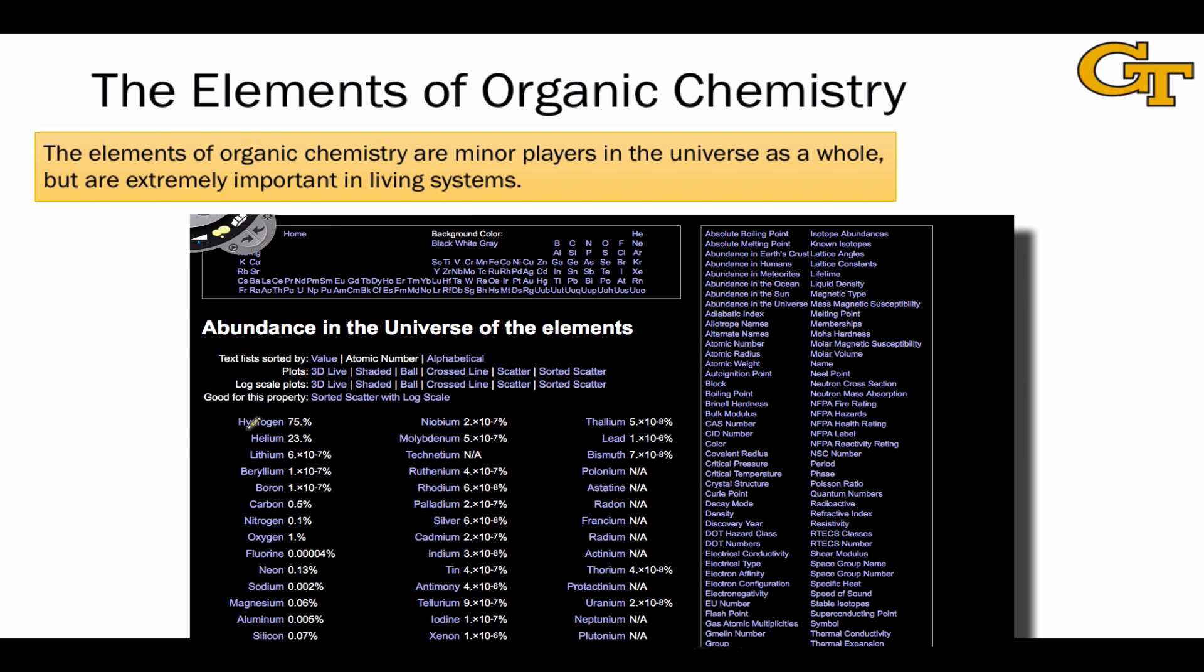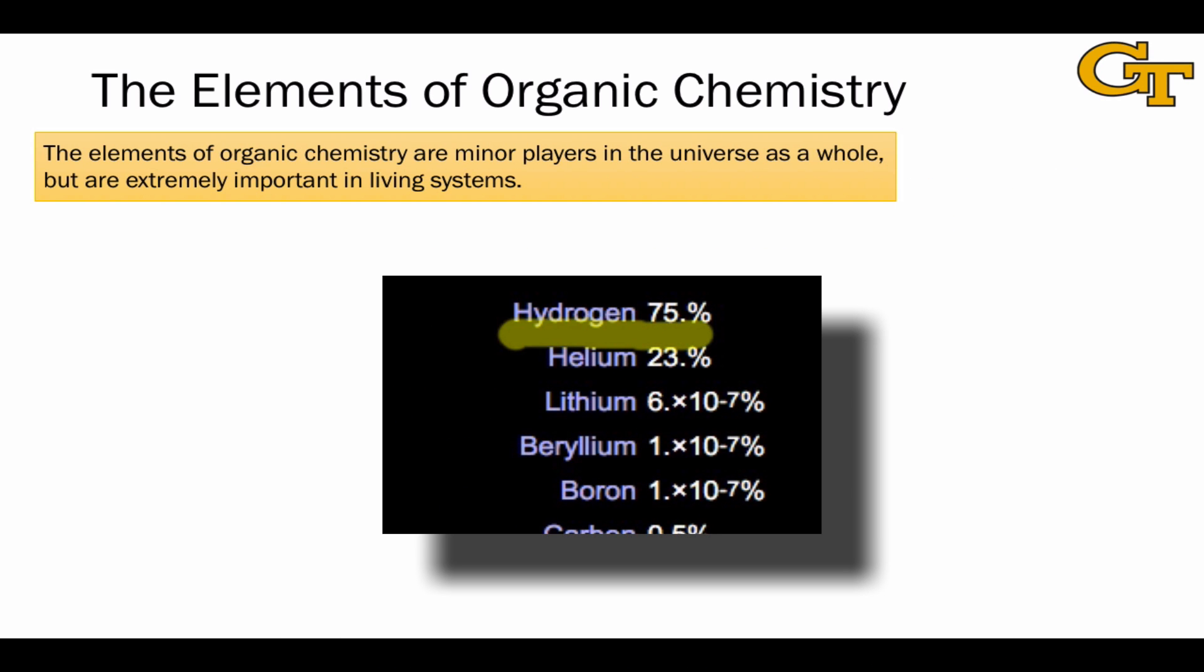If we look, for example, at the most abundant elements in the universe, hydrogen leads with about 75%, but helium, lithium, and beryllium—all three of these are non-organic elements. And even boron, which we consider an organic element kind of in an honorary sense, is found most often in the universe in an inorganic context.